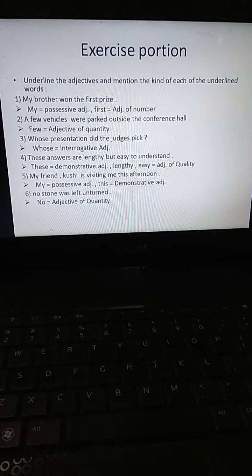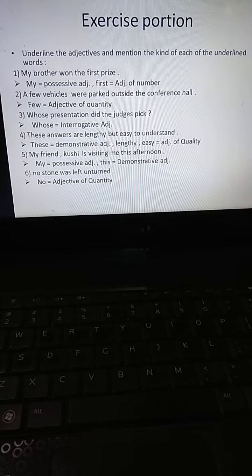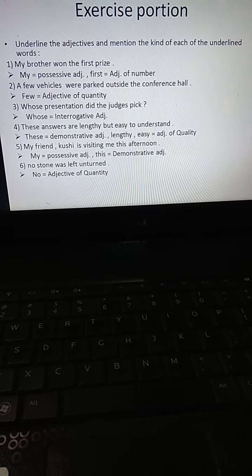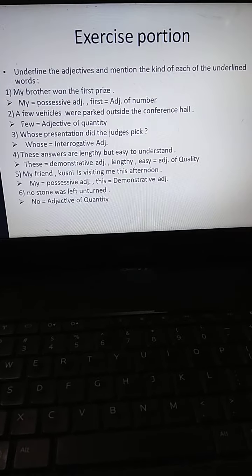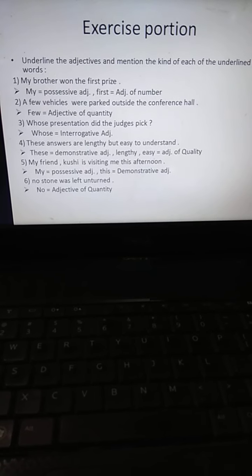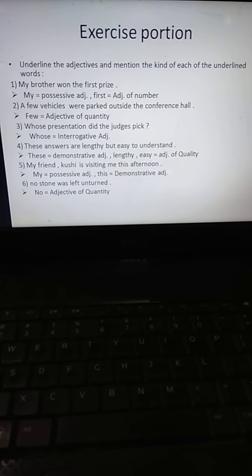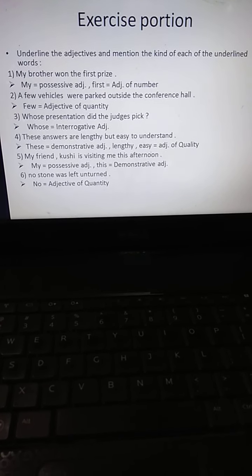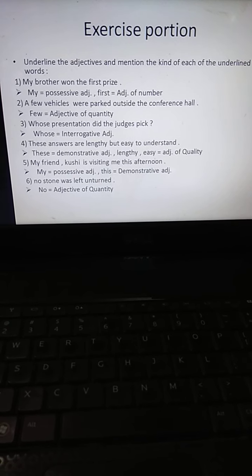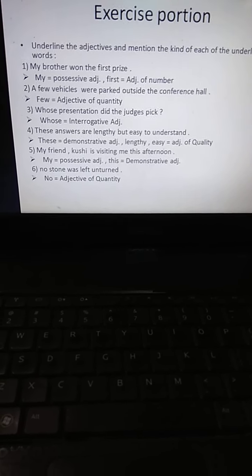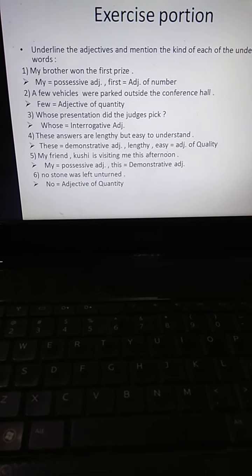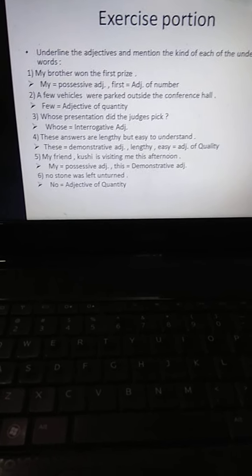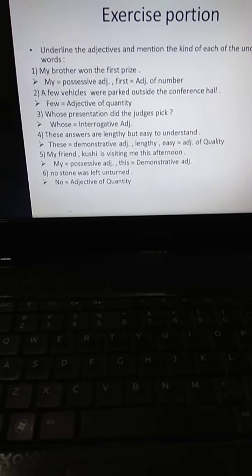Now students, have a look at the exercise portion of this chapter. Underline the adjectives and mention the kind of each of the underlined words. What we have to do is underline the adjectives and mention the kind of each of the underlined words. My brother won the first prize. In this, my is a possessive adjective and first is an adjective of number. Underline my and first.